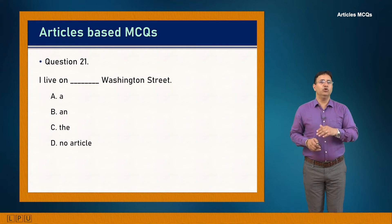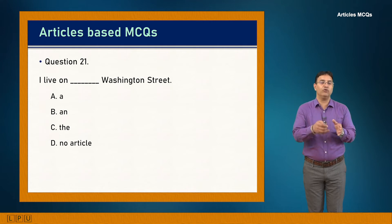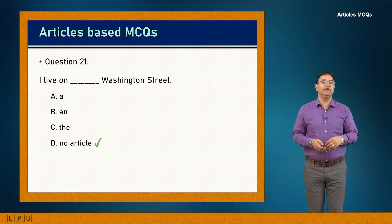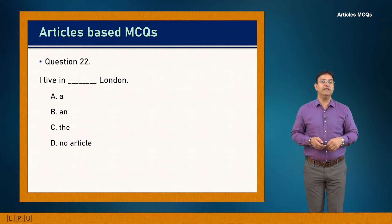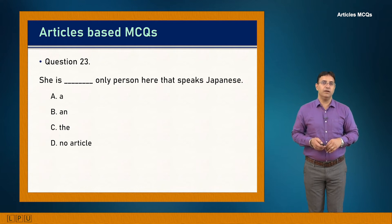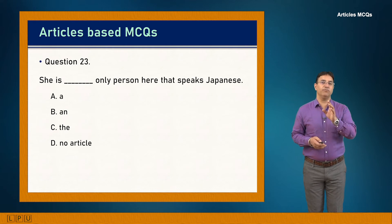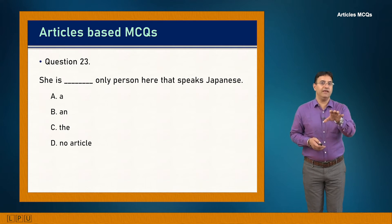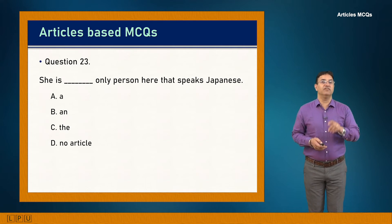Question 21: I live on dash Washington Street. It's a proper name, so no article is used in most cases. Answer is D: 'I live on Washington Street.' Question 22: I live in London. Same logic — proper names don't take articles. Answer is D.